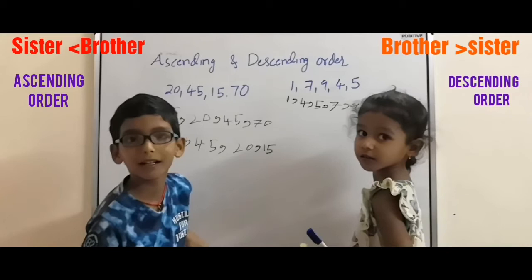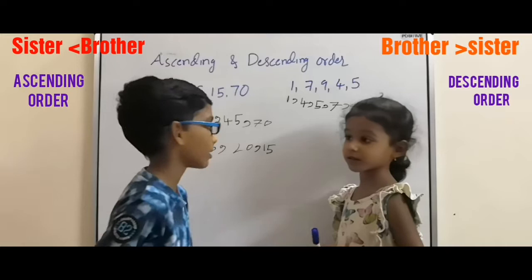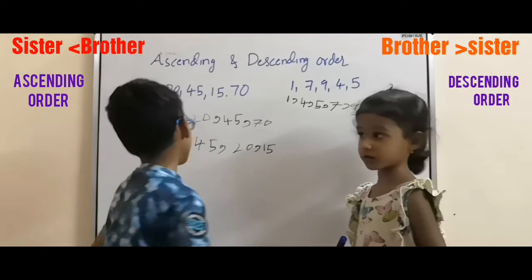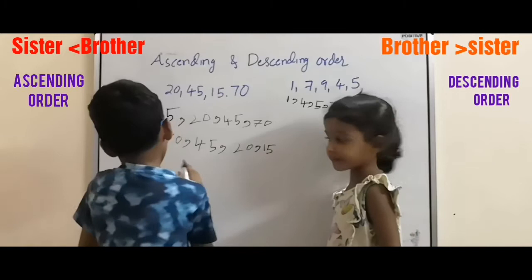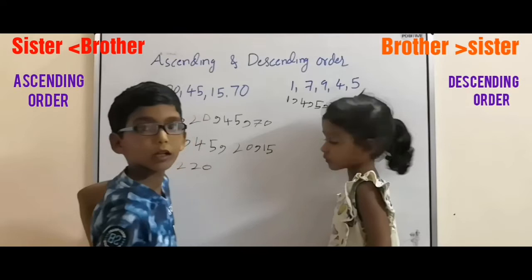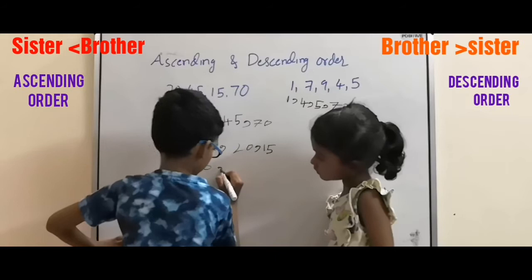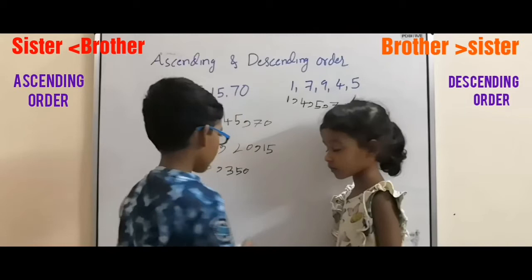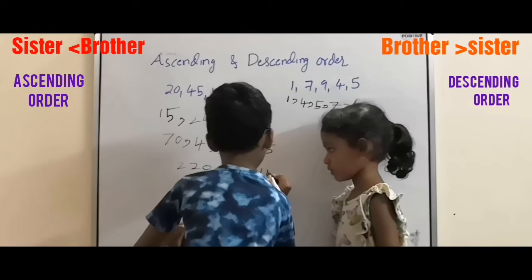Now I will tell you three-digit numbers. You have to write in ascending order and descending order. First number is two hundred and twenty. Next number is three hundred and fifty. Next number is one hundred and forty-seven. Now you write ascending order and descending order.